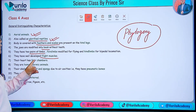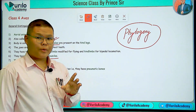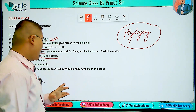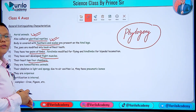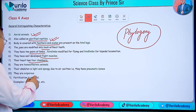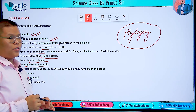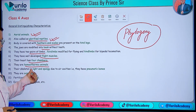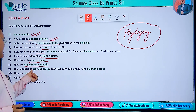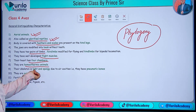Their heart has four chambers — right atrium, right ventricle, left atrium, left ventricle — just like ours. They are homeothermic animals, meaning they are warm-blooded. This is an important point to remember.